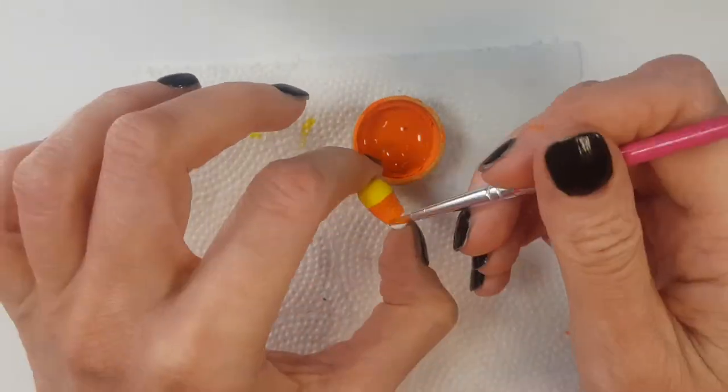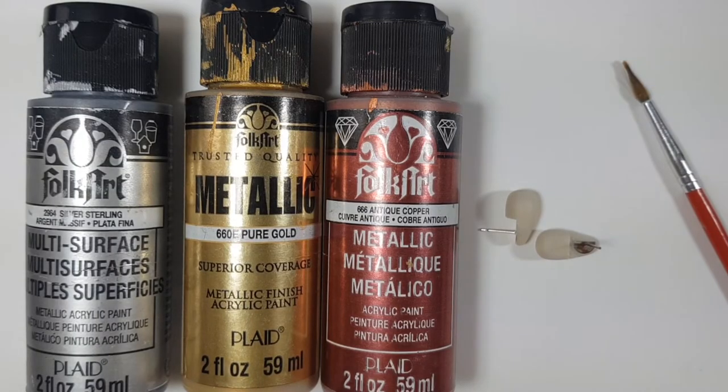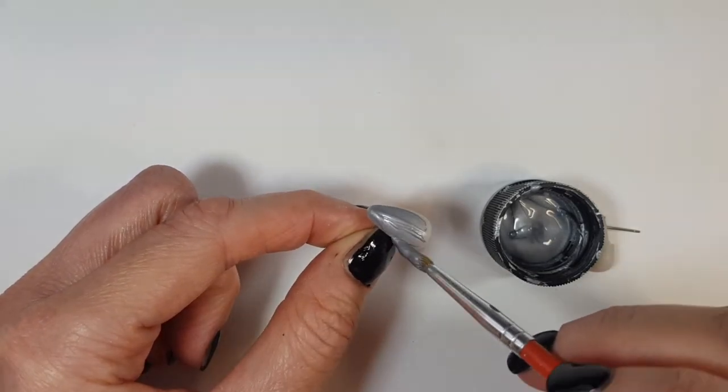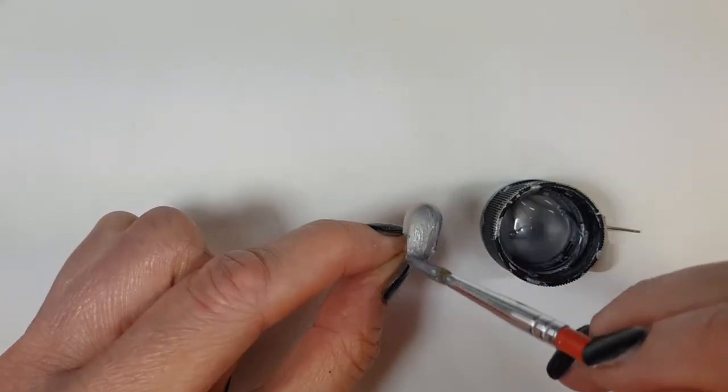Now I wanted to go for metallic candy corns as well, so I'm just using some silver, gold, and copper. And I'm doing pretty much the same thing. My silver is going to be like the white part where I painted the whole thing.